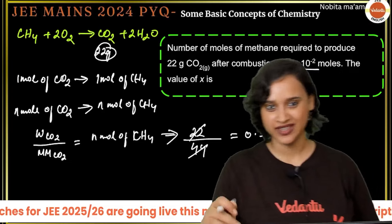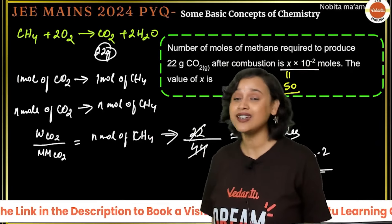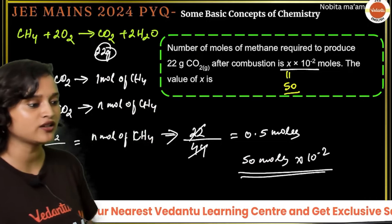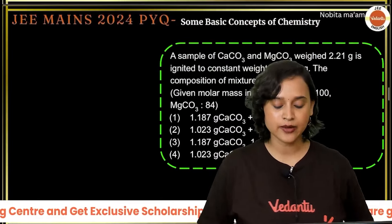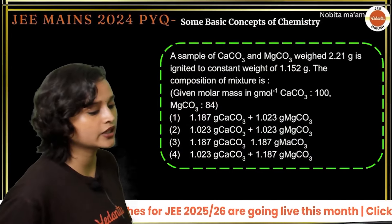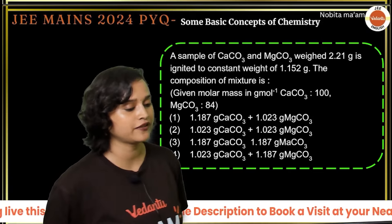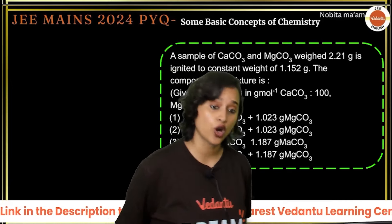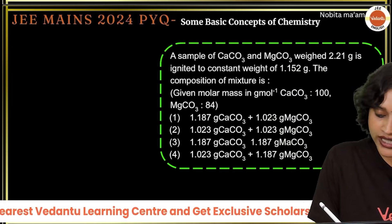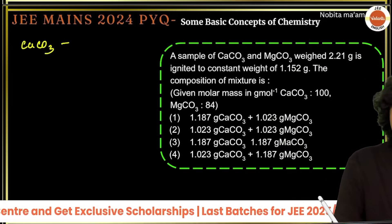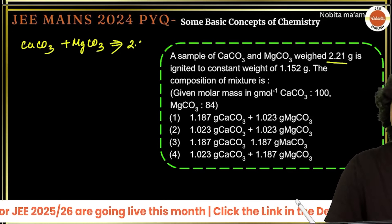These are all 2024 questions — they are not asking tough questions! Moving on: a sample of calcium carbonate and magnesium carbonate was weighed at 2.21 grams, then ignited to a constant weight of 1.152 grams. Find the composition of the mixture.